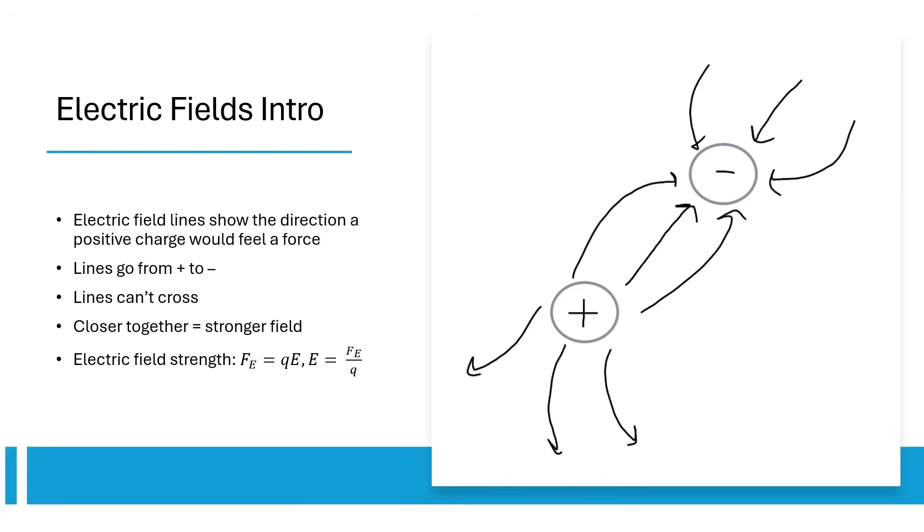We can find a numeric value for the E-field strength at a point by dividing the electric force a particle would feel by the particle's charge.